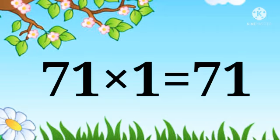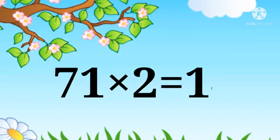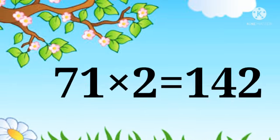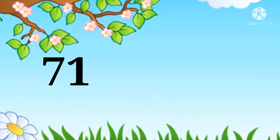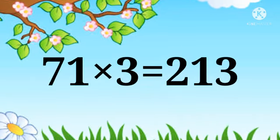71 x 1 = 71, 71 x 2 = 142, 71 x 3 = 213.